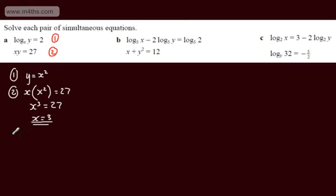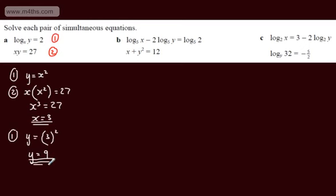I can now take my value of x and substitute it into equation 1. y is equal to x squared, so we'll have y equal to 3 squared, giving y equal to 9. So we found that x is equal to 3 and y is equal to 9. Note that negative 3 and negative 9 would satisfy one equation but not the other, as x and y must be positive quantities.